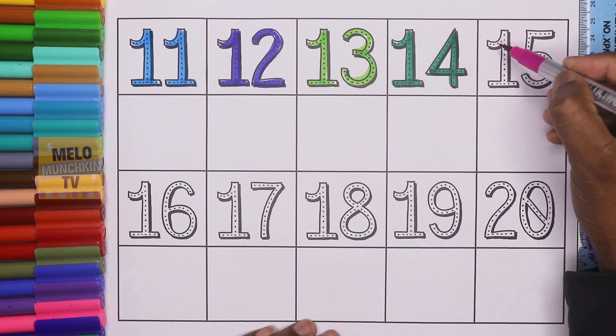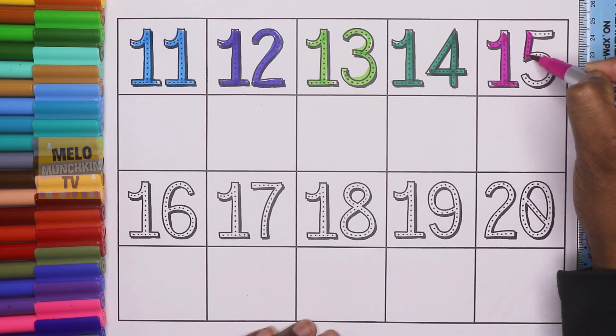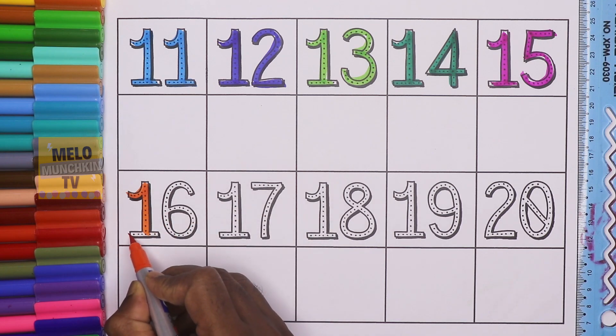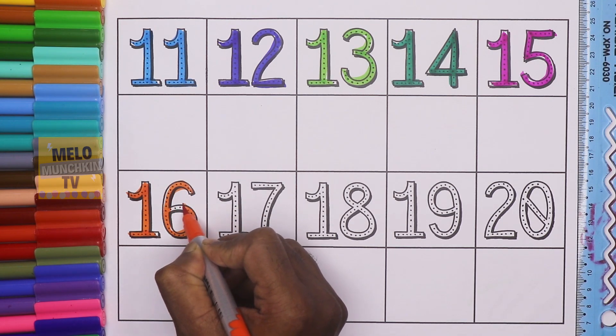This is 15. 1, 5, 15. This is 16. 1, 6, 16.